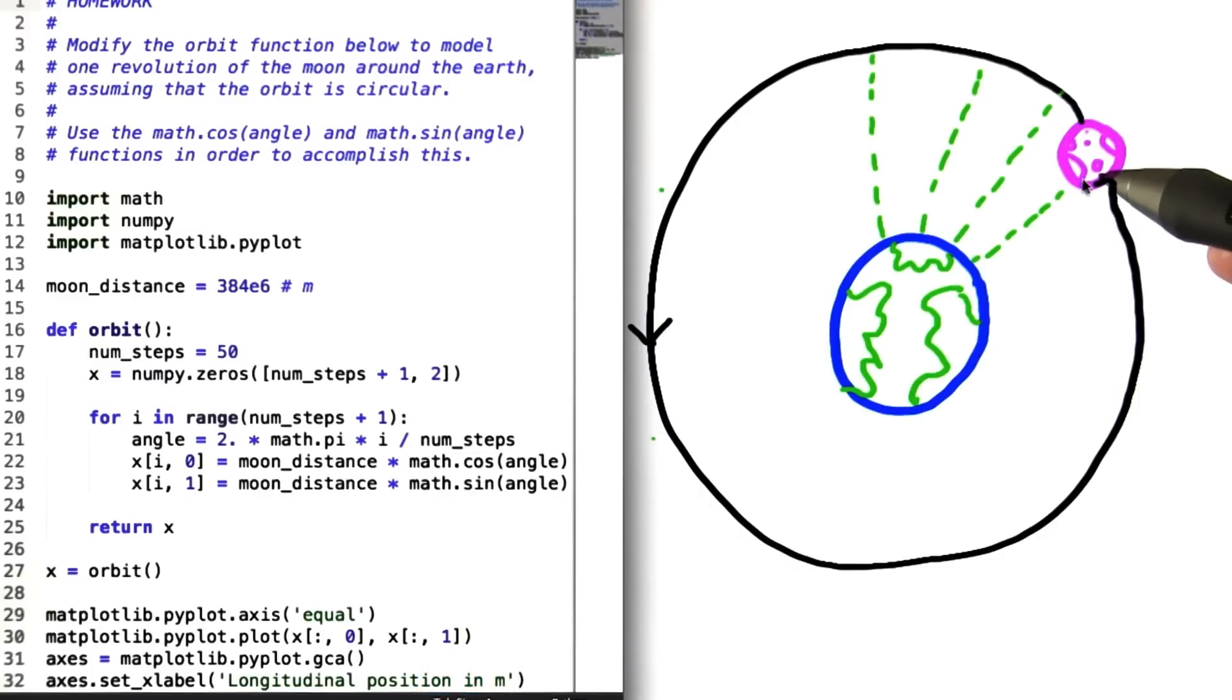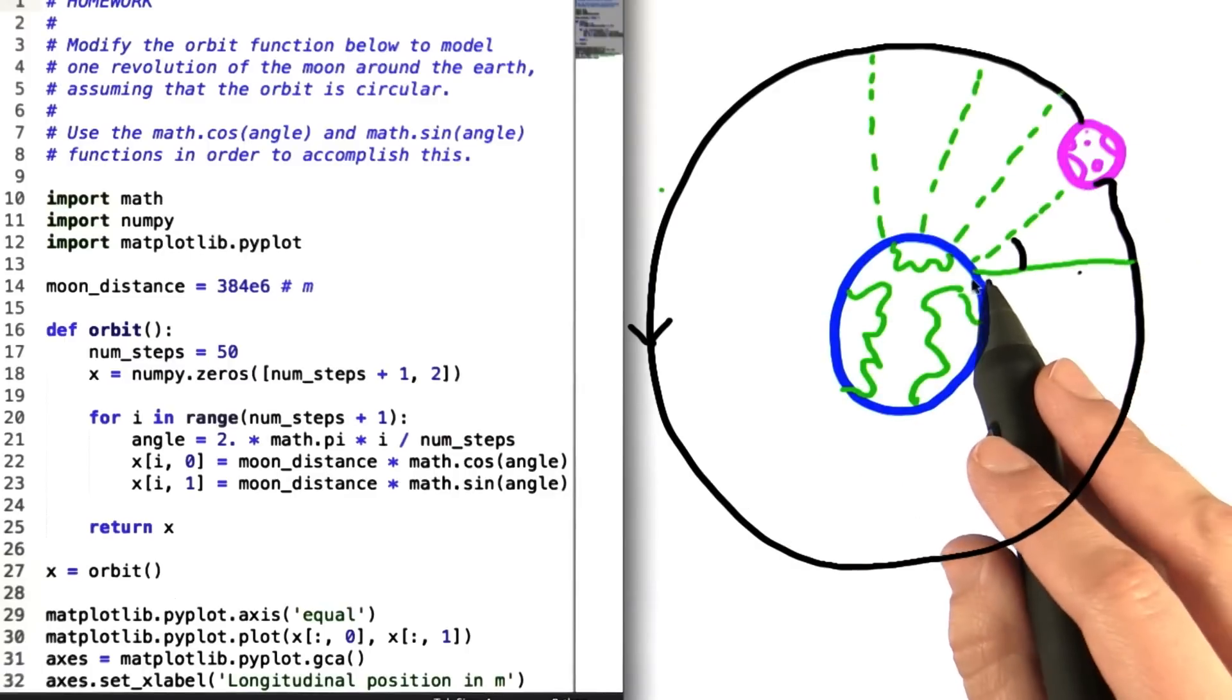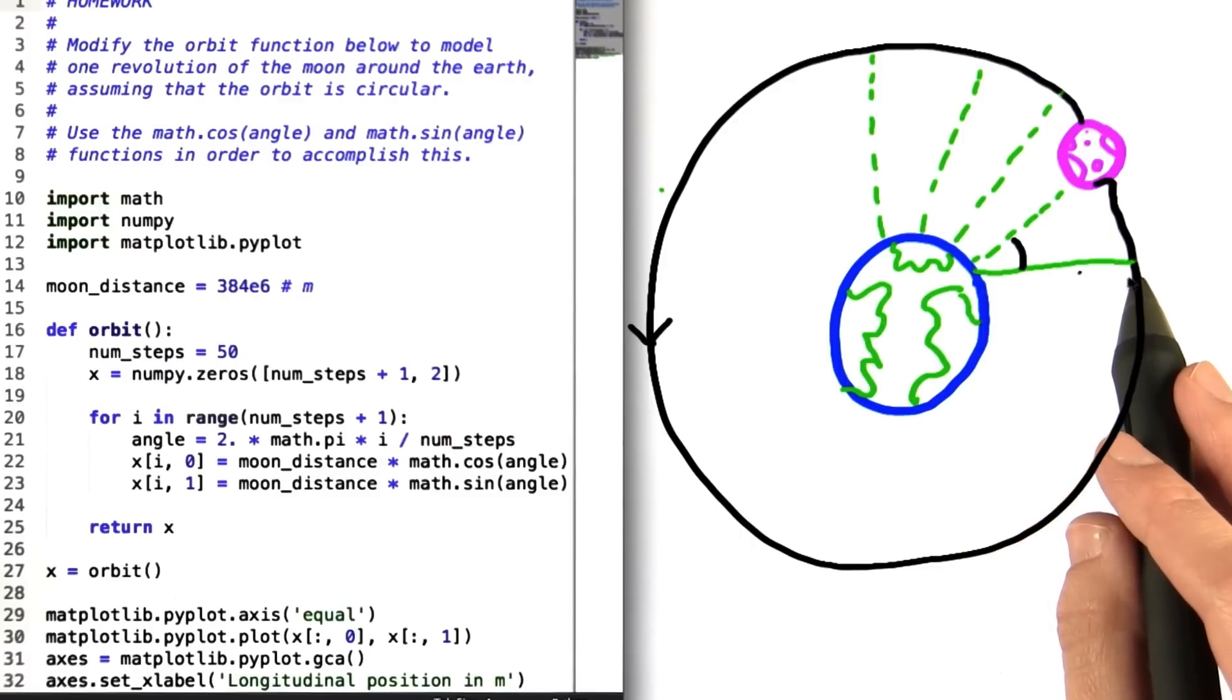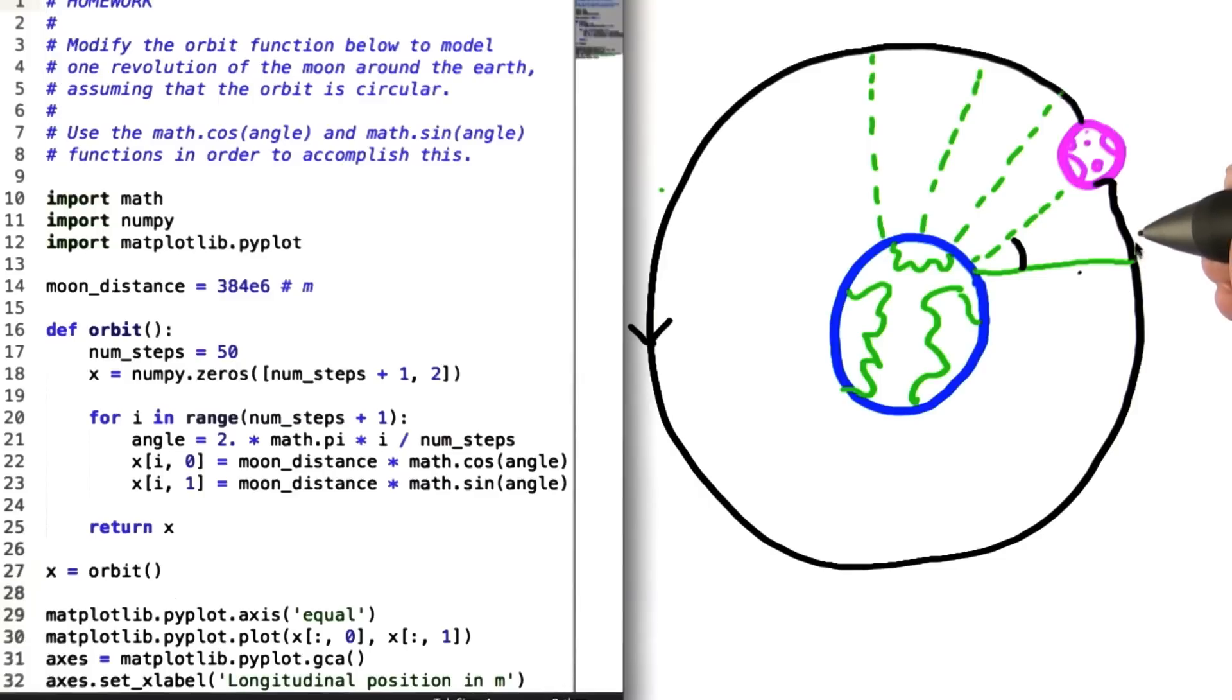This is one of those cases where being able to see a right triangle in this picture is very helpful. Looking at our picture, this horizontal line right here that extends from the earth out to the moon's orbit is the 0 radian or 0 degree line. We're measuring all of the angles that the moon is going to be marked at up from this line.